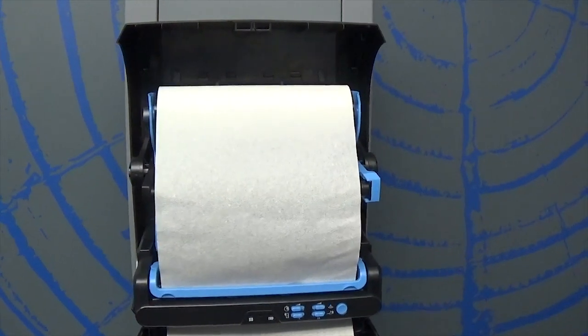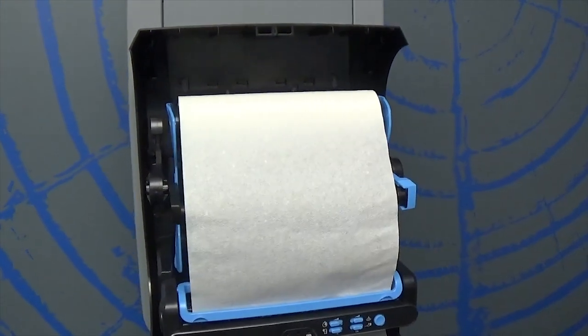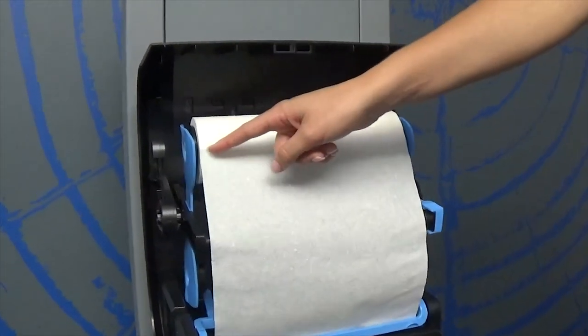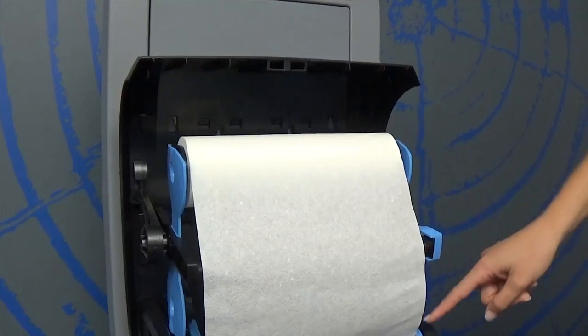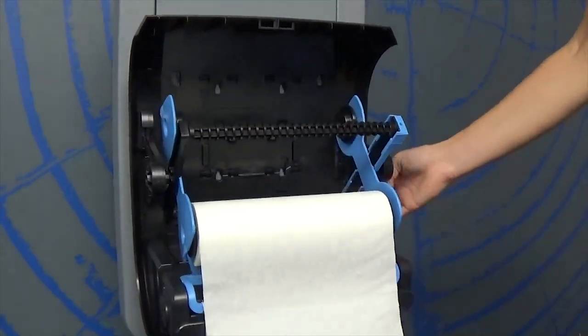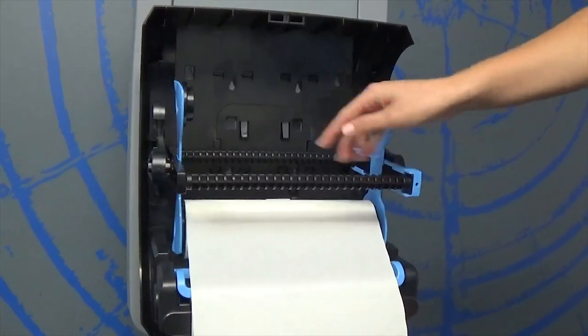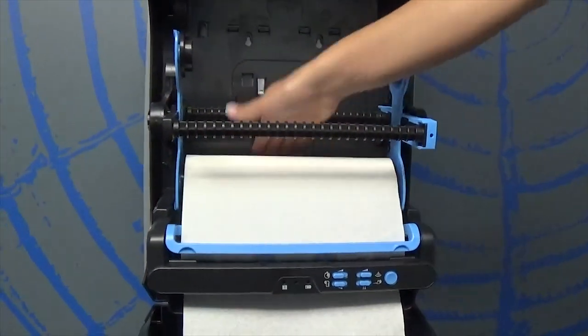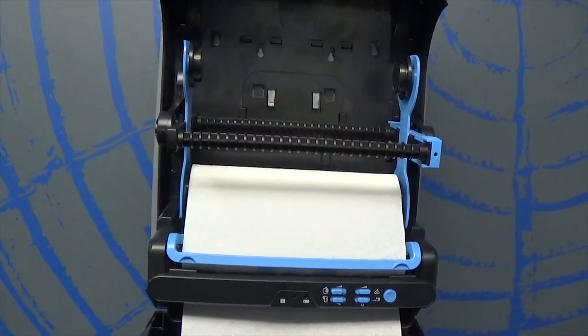Another benefit of this dispenser is the stub roll feature. This means that when a roll is nearly depleted, you can move the carousel and insert a new roll. Pull the carousel towards you and rotate it 180 degrees. Once the stub roll is locked into place, roll back the excess paper to create a clean roll.